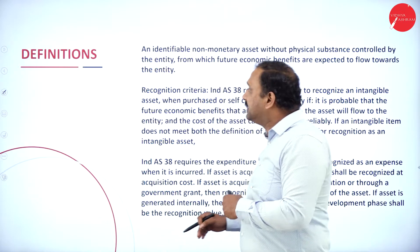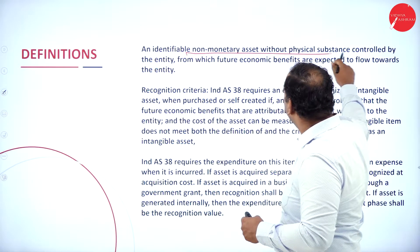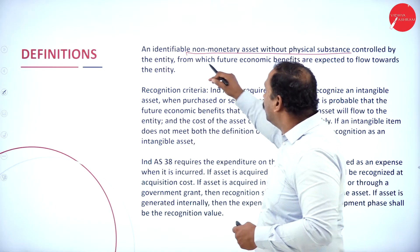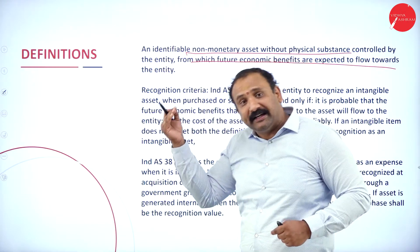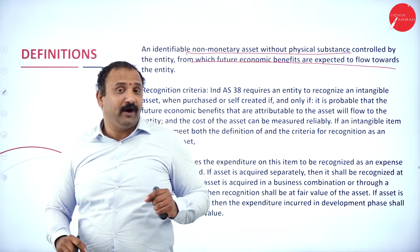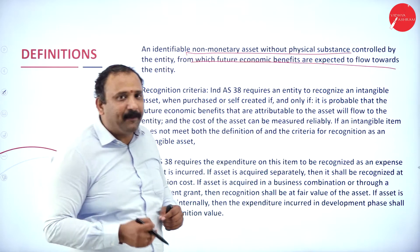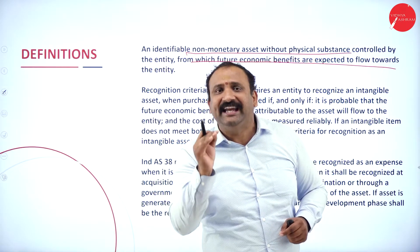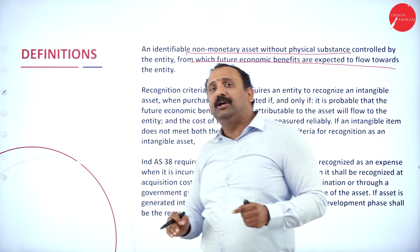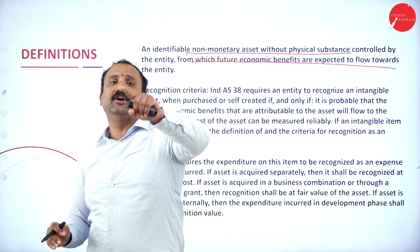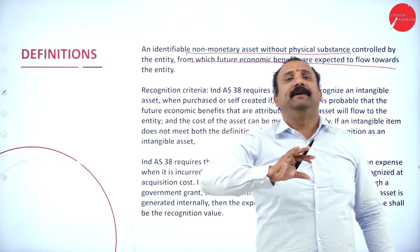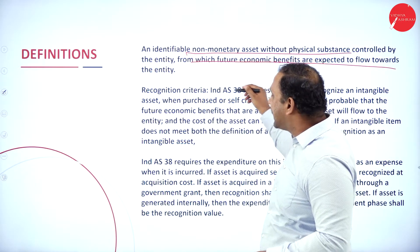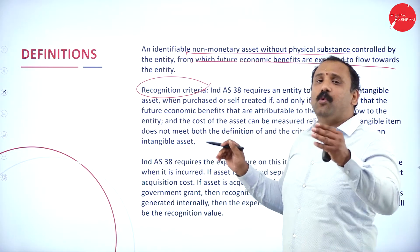The definition of an intangible asset is an identifiable non-monetary asset without any physical substance, controlled by the entity, from which future economic benefits are expected to flow. Many companies spend a lot of time and money on patents and trademarks. Companies like Intel and Texas Instruments spend significant time and money on innovation to derive future technologies that drive economic benefits to the organization.